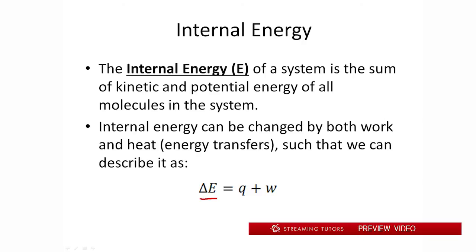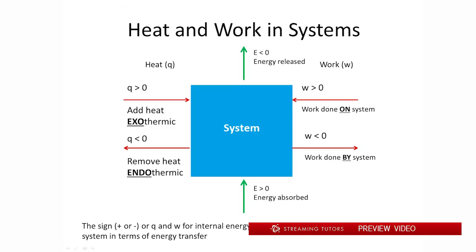Now, in this equation, we have Q and W, but the signs of Q and W are going to be very important to look at. So let's take a look at this little graphic here. So I'm just going to split this up, heat and work. So over here we have heat, over here is work. So for heat, if we have heat going into a system, as you'll see right here, that's going to be a positive Q. We're adding heat into a system. Conversely, if we're taking heat away from a system, that's going to be a negative Q, and that's going to be an endothermic kind of thing. If we're adding heat, it's going to be an exothermic kind of reaction.